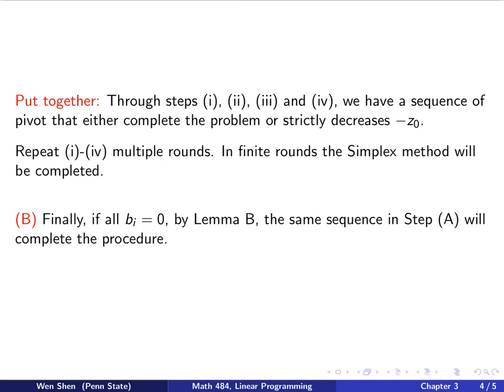And now, the big part, capital B. We consider the counterpart. Finally, we consider the case where all the bi's are 0 for the original LP problem. Then we can simply invoke lemma B, which says that the same sequence in step capital A, which we have discussed here, would complete the procedure as well. Then this completes the whole proof of theorem C.